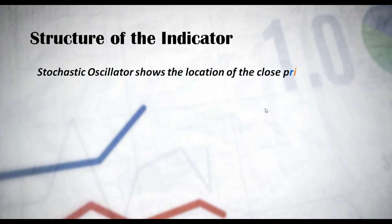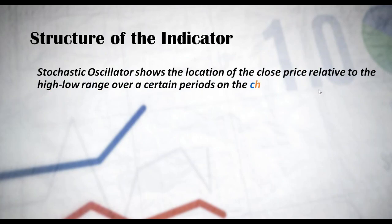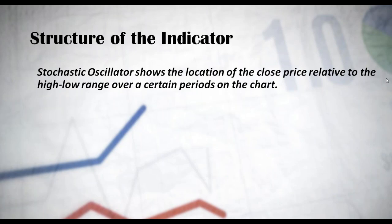The stochastic oscillator shows the location of the close price level relative to the high-low range over a certain period on the chart. It creates a ratio between the close price of a financial asset relative to the high-low range, taking into consideration respective periods. The most important terms to remember are 'close price' and 'relative to the high-low range' — that's what's applicable for the stochastic oscillator.